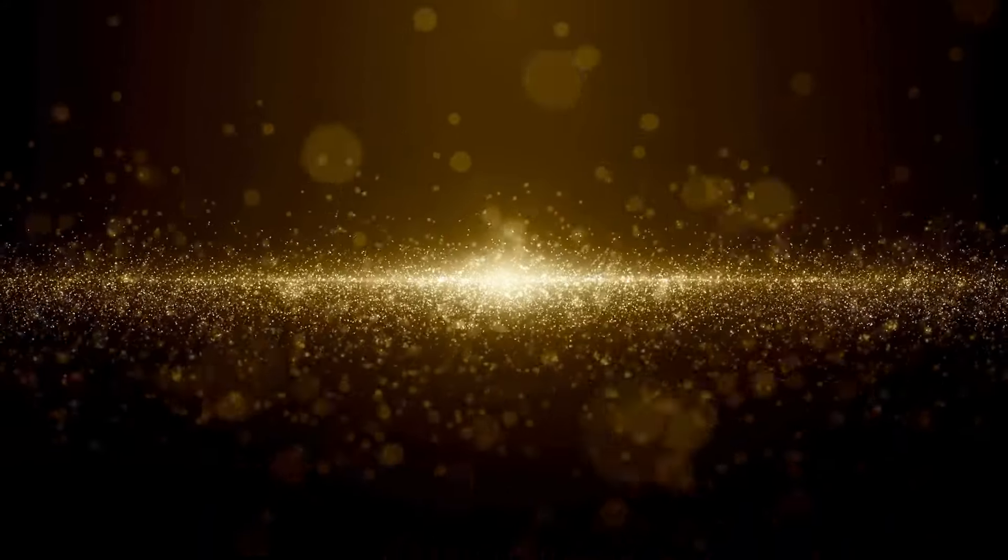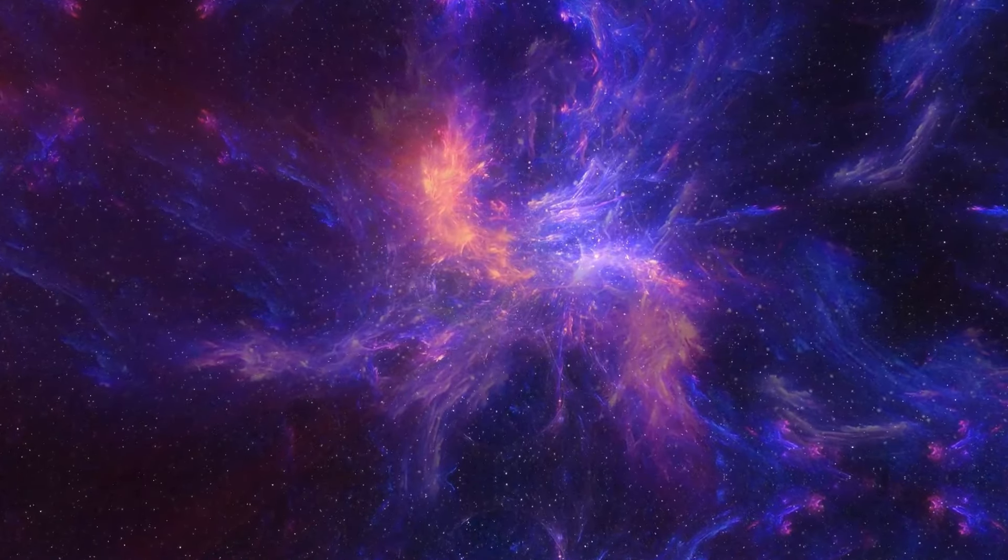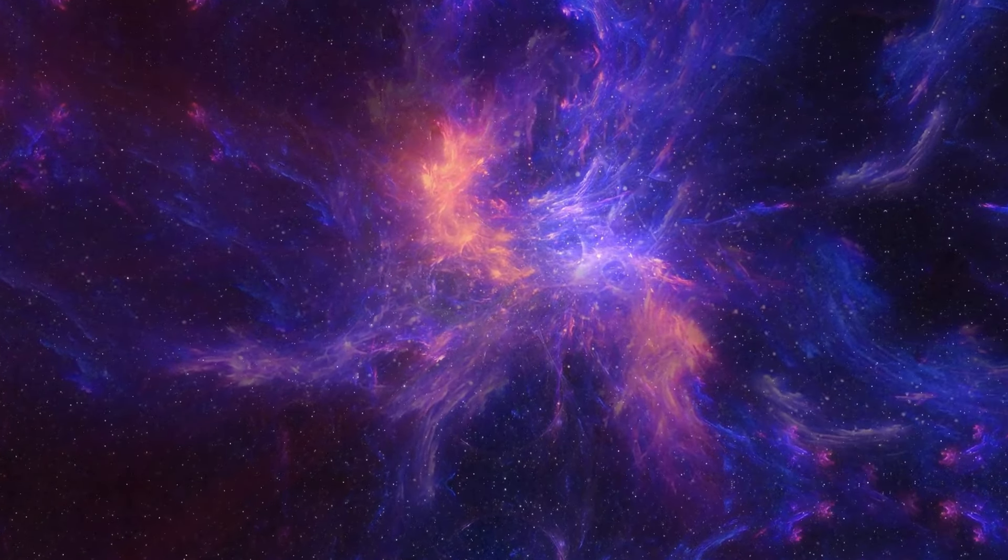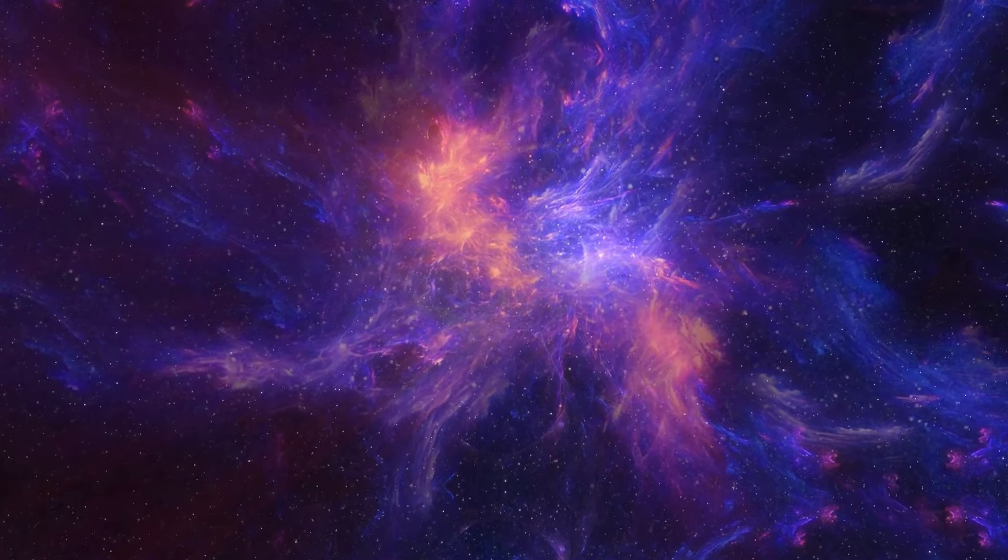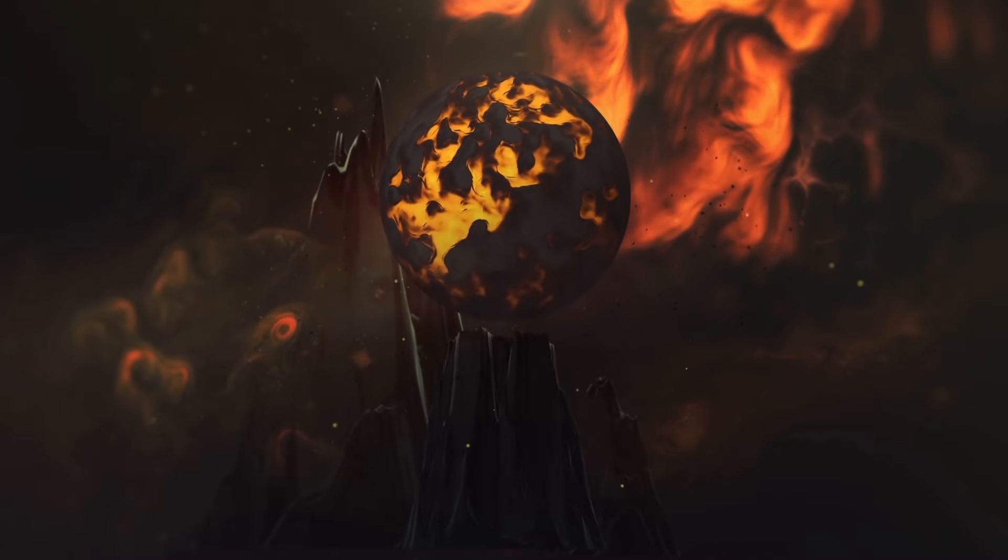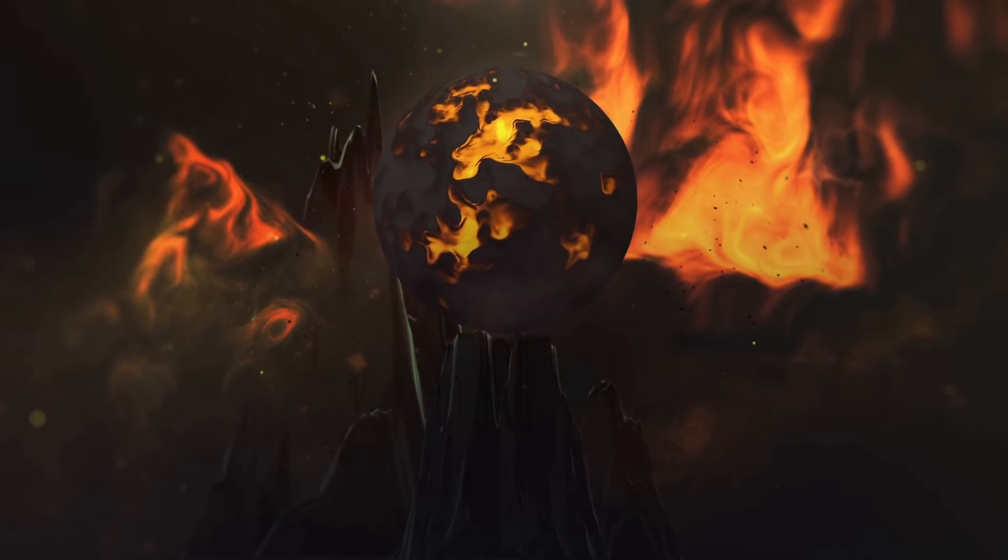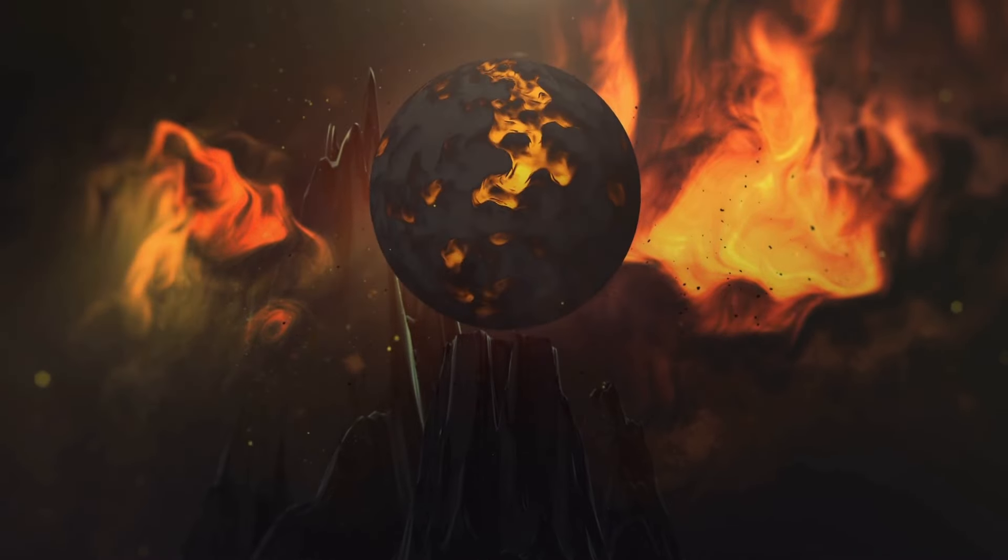However, recently Betelgeuse has displayed strange behavior, such as surprising dimming and brightening cycles, which many scientists believe signal that the star is nearing the end of its life. The eminent physicist Brian Cox recently made a significant statement that Betelgeuse is on the verge of a catastrophic explosion expected to happen within the next two weeks.